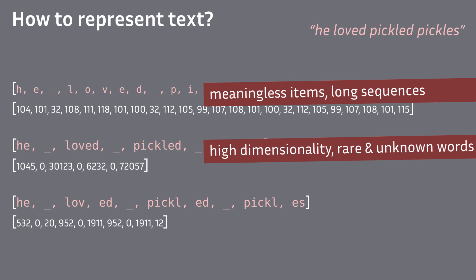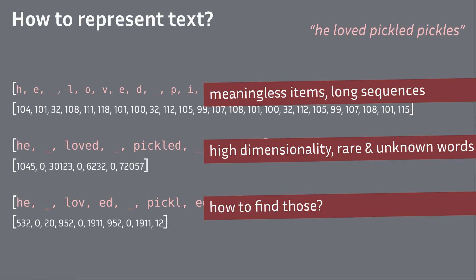We converge to something between these two — some repeating patterns that resemble morphemes as a singular unit with an embedding. This way, we have short sequences, meaningful units, and can represent unseen words. The problem is finding such units, but the answers to that are tokenization algorithms.